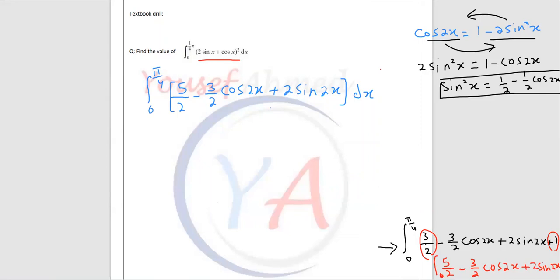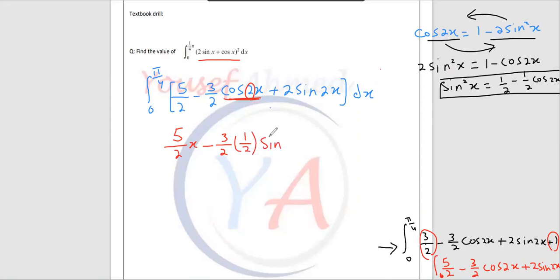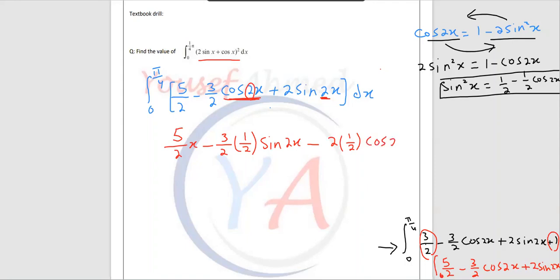Now let's focus on the integral. If you want to integrate 5 over 2, it will be 5 over 2 x, because any constant will be integrated by adding x. What's the integral of cosine? It's sine. And then this 2, which is the coefficient, you will take the reciprocal — so you have minus 3 over 2 multiplied by half times sine 2x. Plus: now you take the reciprocal of the coefficient 2, giving 2 multiplied by 1 over 2, and take care — the integral of sine is negative cosine. So it becomes negative cosine 2x. Evaluated from 0 to π/4.